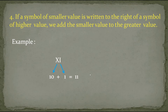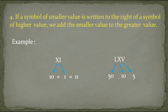Let's take one more example: LXV. We know L is equal to 50, X is equal to 10 and V is equal to 5. As per this rule, X is written to the right of the higher value L, so we add those two. And V is smaller than X and written to the right of the higher value, so we add again. The value of LXV is 65.